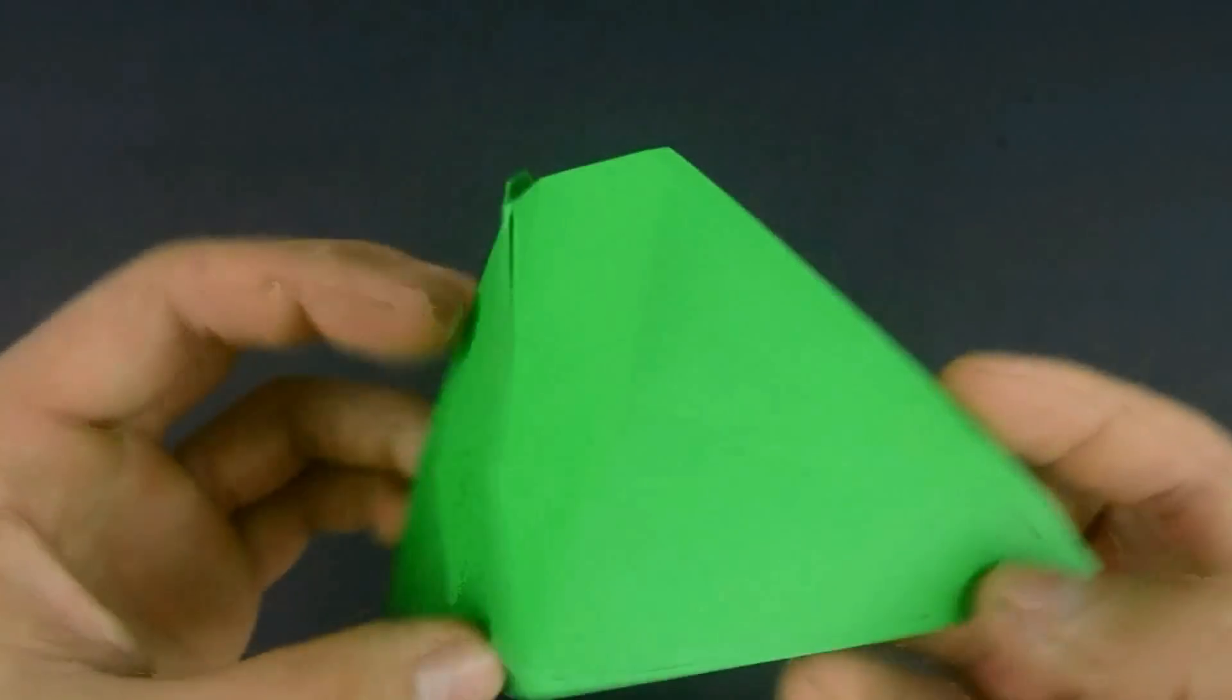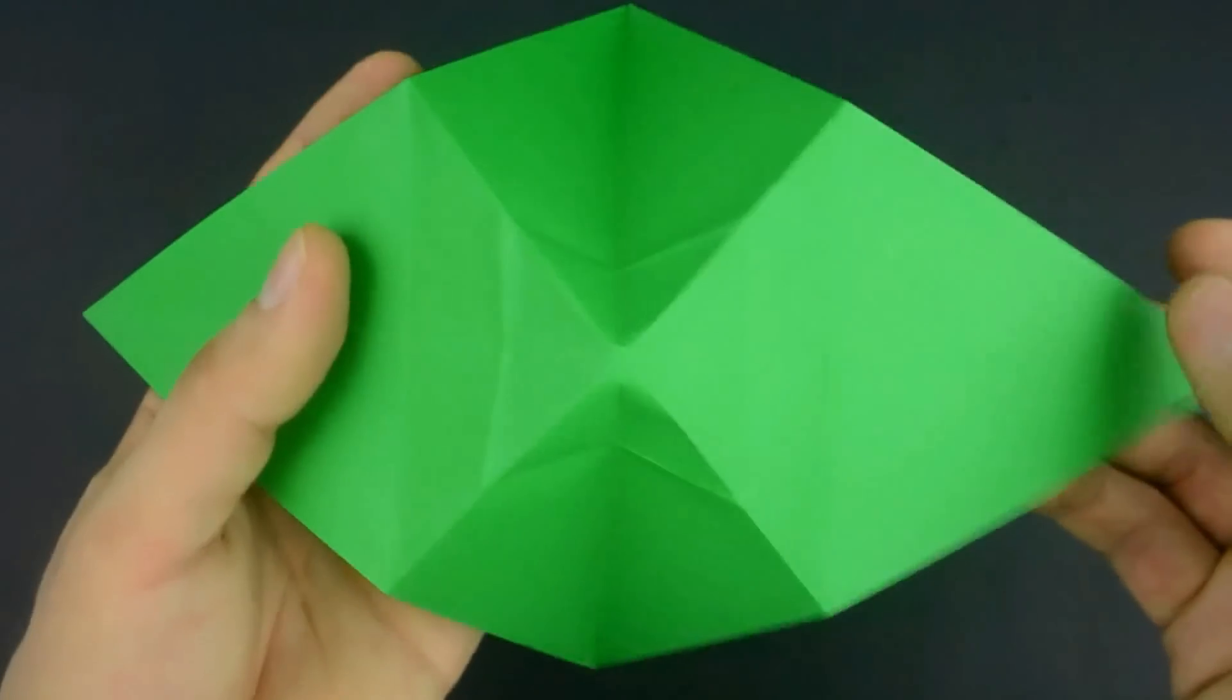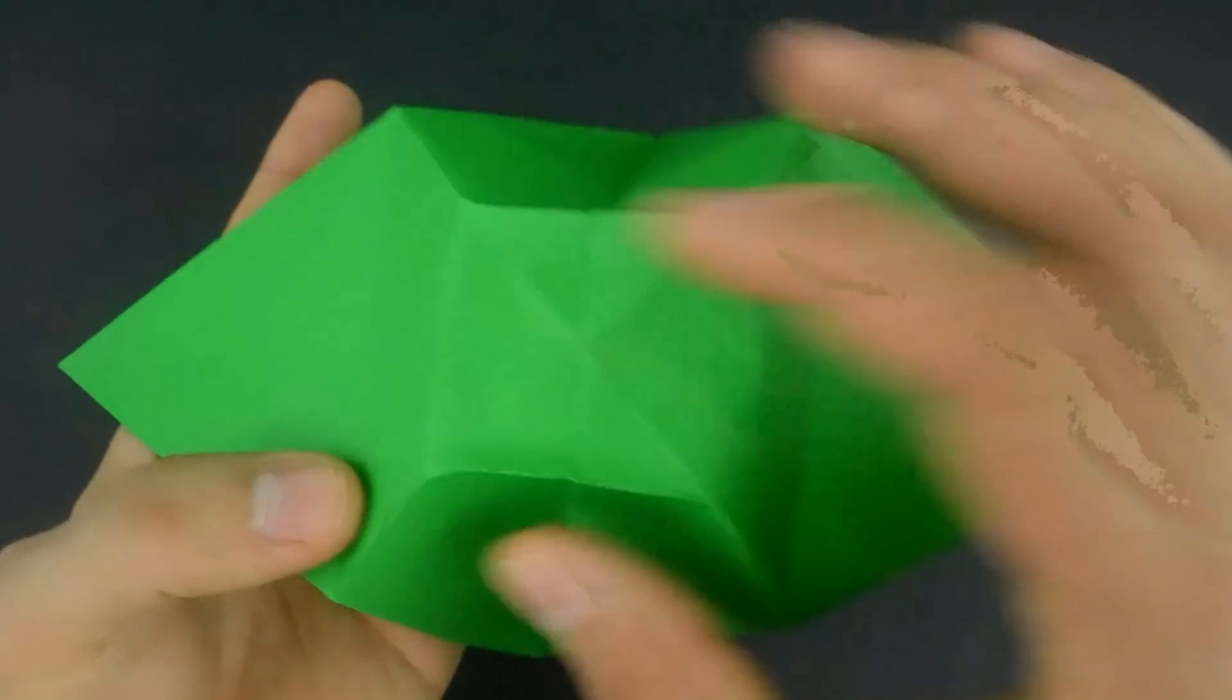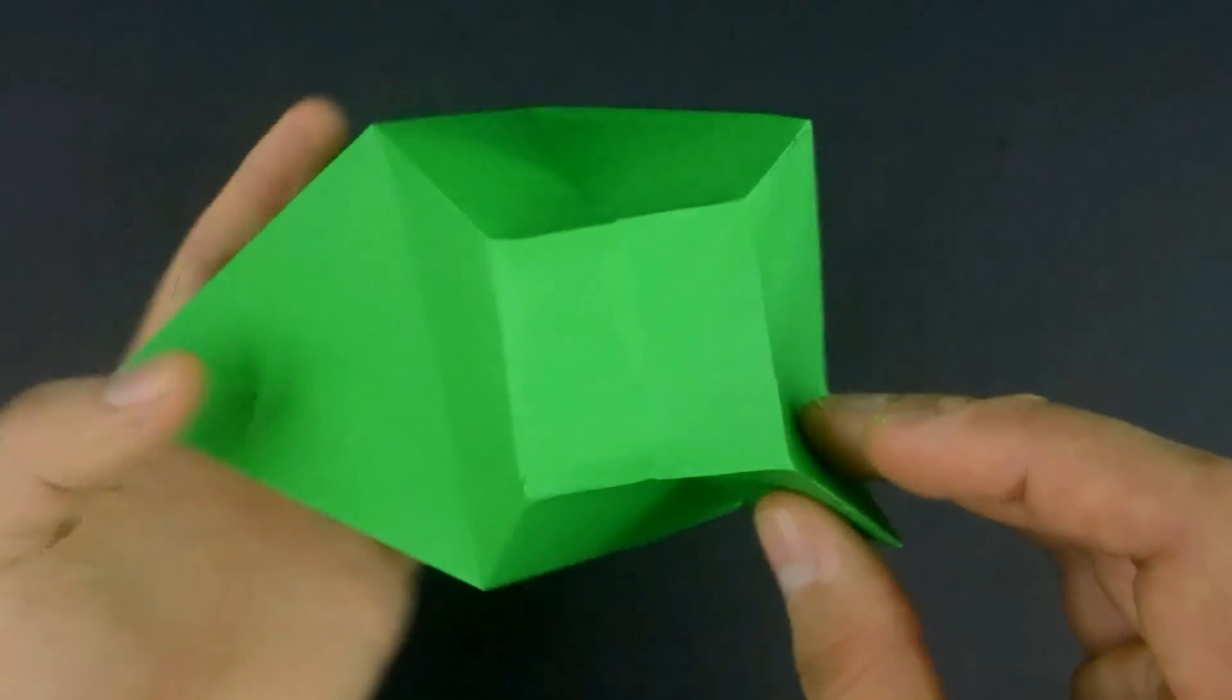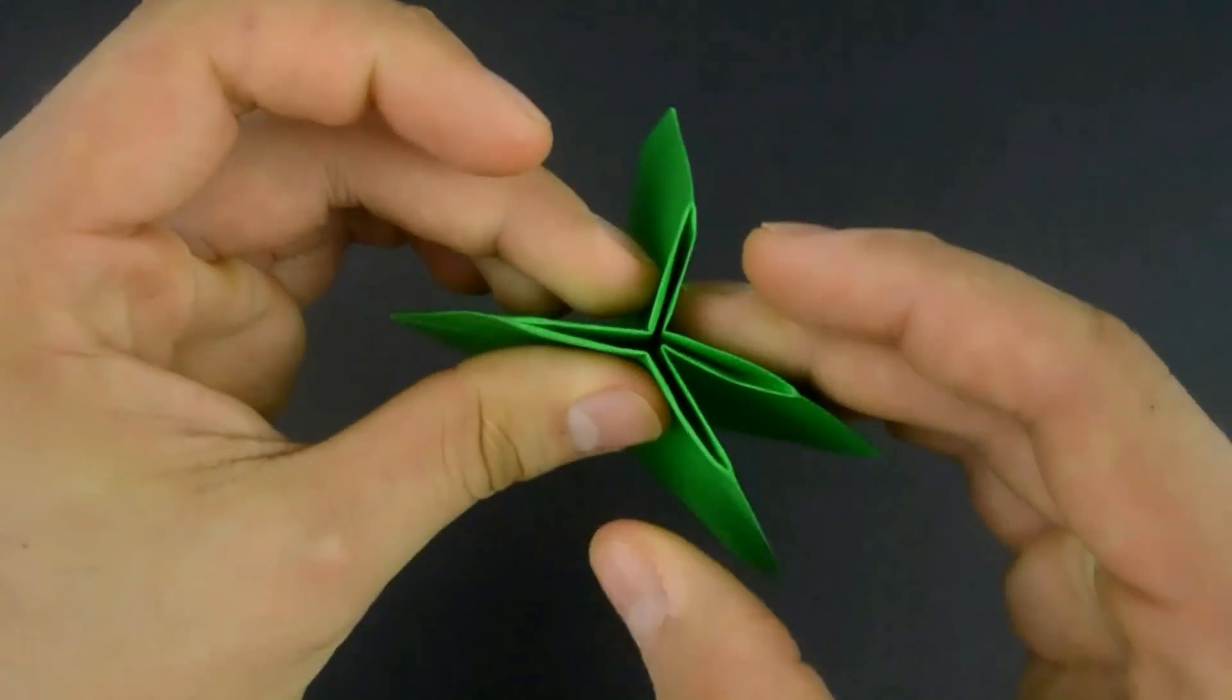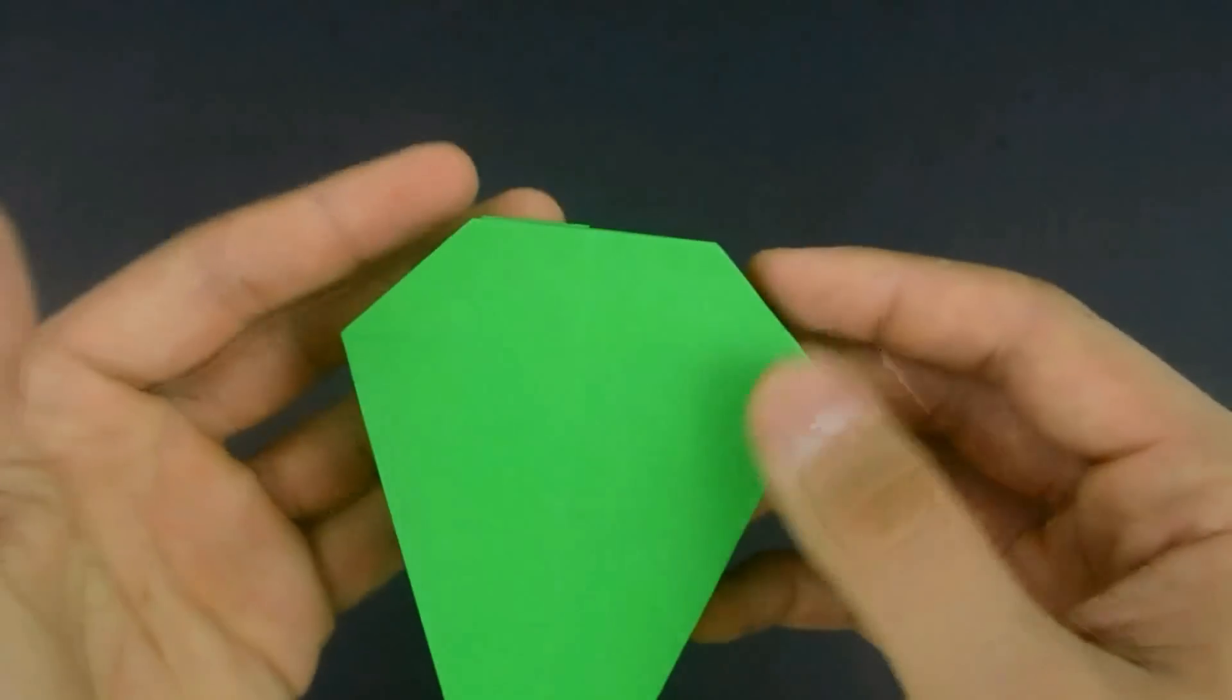Now pull the flaps to open the center and reinforce these new creases making a little square. Now close reversing the same square, pushing to the middle. And for now this is the result.